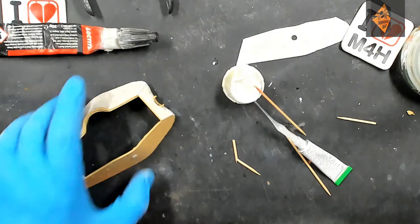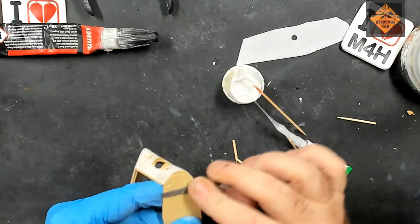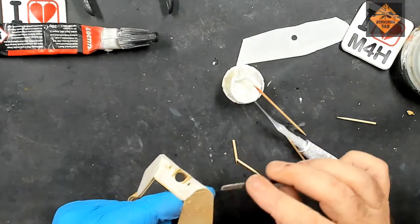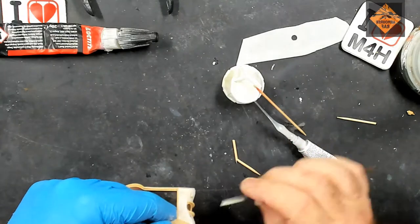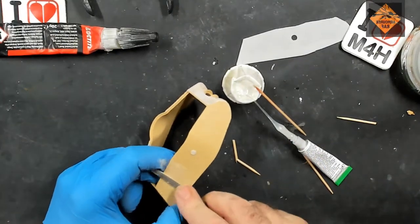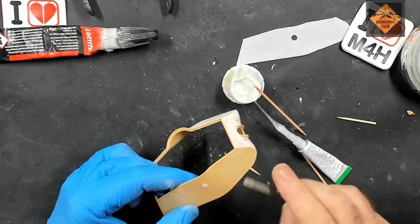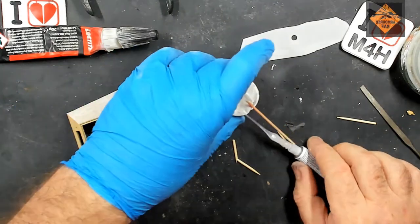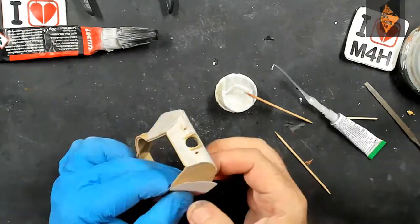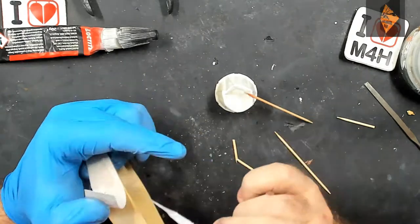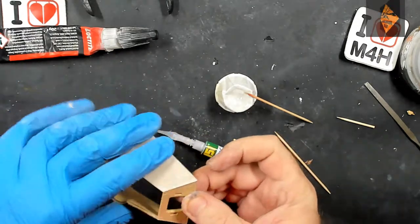Now for the right hand side. But firstly we need to remove some bits and bobs from the outside. So let's get those sanded off and crack on. That's those sanded back. This now allows us to attach the Zimmerit to the turret. Here goes. That's the right hand side done.